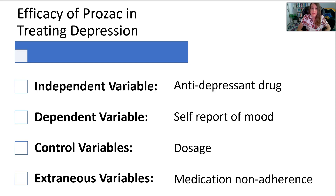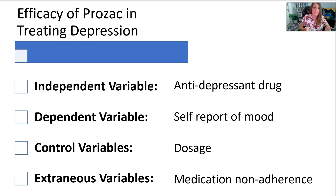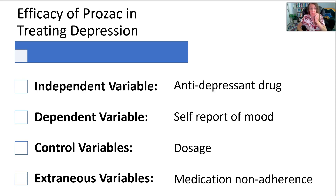The independent variable would be the antidepressant drug, Prozac. The dependent variable would be the participant's self-reported mood. One control variable could be the dosage — ensuring everyone gets the same or appropriately adjusted dosage. Other control variables include severity of depression and study duration — the same amount of time in both the control and intervention groups. Extraneous variables could include medication non-adherence: unless you're watching people take each pill, they might miss doses, double up, or otherwise not follow the prescription. Genetics and other factors could also be extraneous.